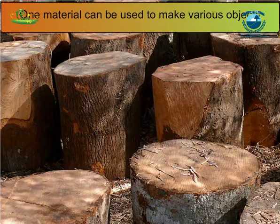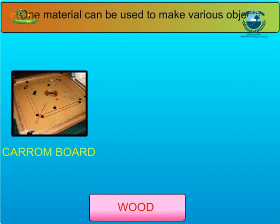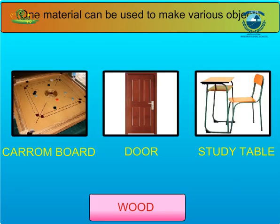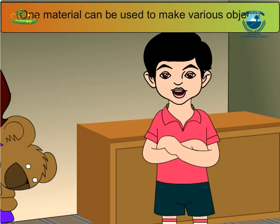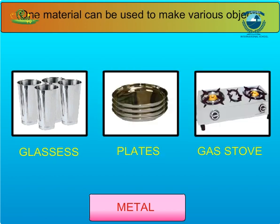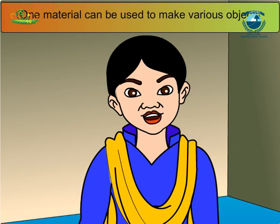Similarly, wood is also used for making many things, like my carom board, doors, and your study table! In your kitchen you have so many things made up of metal, like glasses, steel plates, your gas stove. Yes, and your papa's car is also made up of metal.